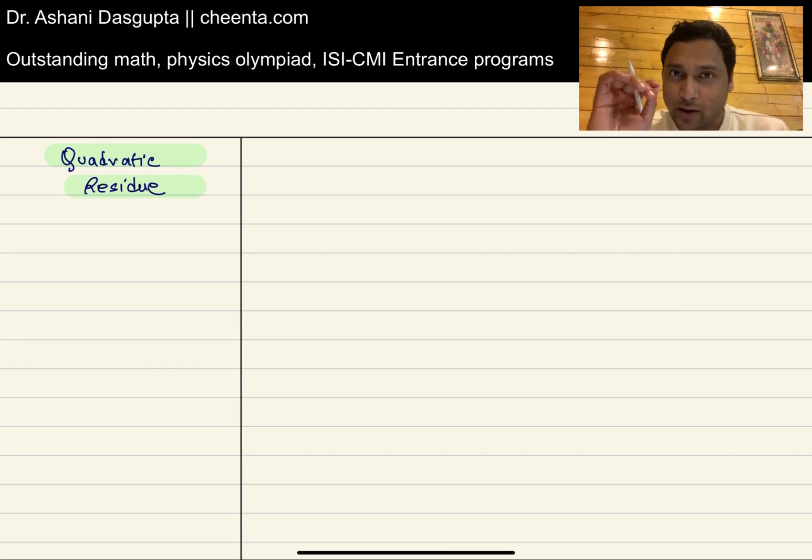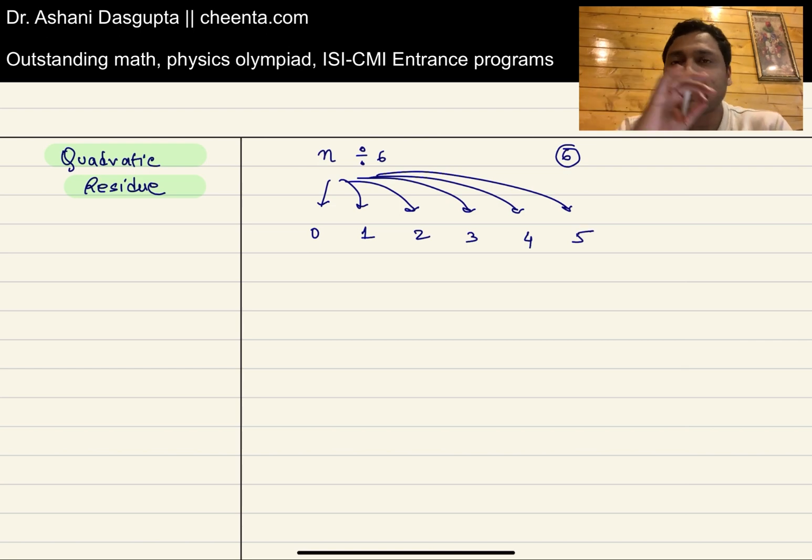Very quickly it gets quite complicated. For example, quadratic residues are related to the quadratic reciprocity, which is one of the most interesting theorems in elementary number theory. Let's talk about it. So suppose you have a number 6. Now if you divide any number n by 6, what are the possible remainders? Well, the possible remainders are 0, 1, 2, 3, 4, and 5.